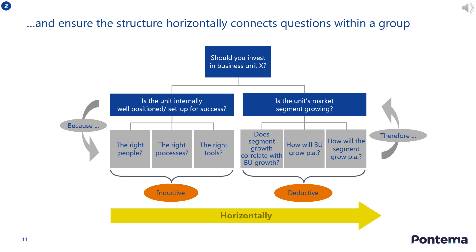The pyramid can be constructed with either inductive or deductive reasoning. Inductive reasoning is a bottom-up approach whereby different themes are combined to collect thoughts and facts to obtain a specific conclusion. For example, from the slide we could argue that business unit X is well positioned within its parent company because it has the right people, processes and tools in place.